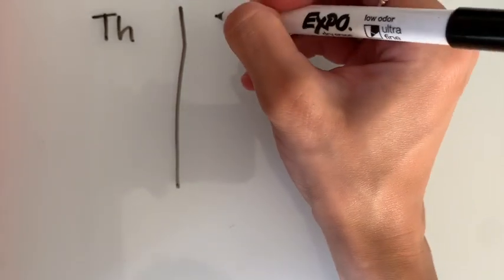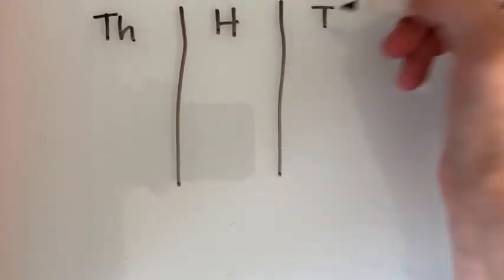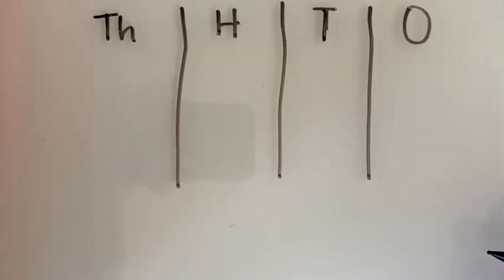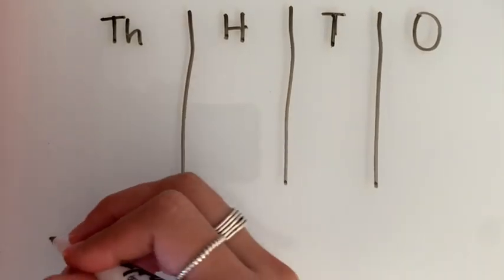Before we get started, we're going to draw our place value chart. This is going to help us stay organized and make sure that we are adding all the numbers in their appropriate place value.